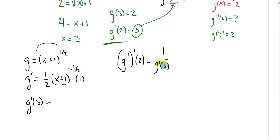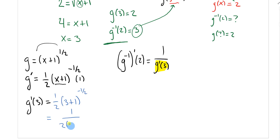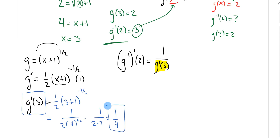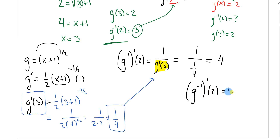Now I plug in x equals three: one over two times (3+1) to the negative one-half, which is one over two times four to the one-half, which is one over two times two, giving g prime of three equals one fourth. Using the formula, g inverse prime of two equals one over one-fourth, and one divided by one-fourth is four. So the final answer is g inverse prime of two equals four.